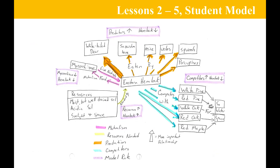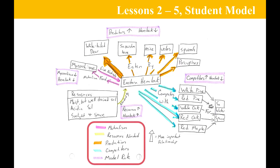This is an example of a student's organism model, which is developed in Lessons 2 through 5. It identifies what an organism needs to survive and its relationship with other species. The species in this model is Eastern Hemlock. The key for the relationships lists mutualism, resources needed, predation, competitors, and model rules. The model rules identify population relationships in the ecosystem, such as an increase in predators resulting in a decrease of hemlock.